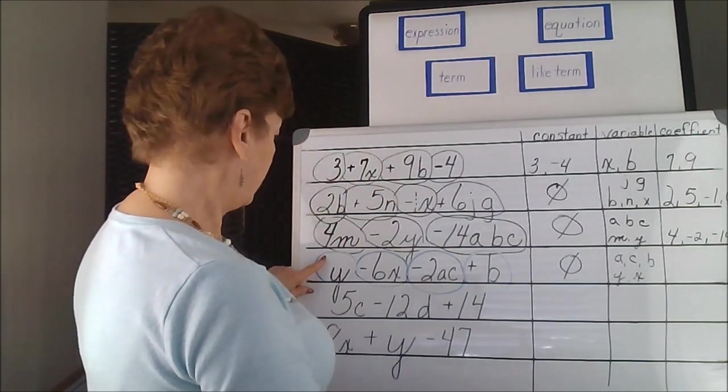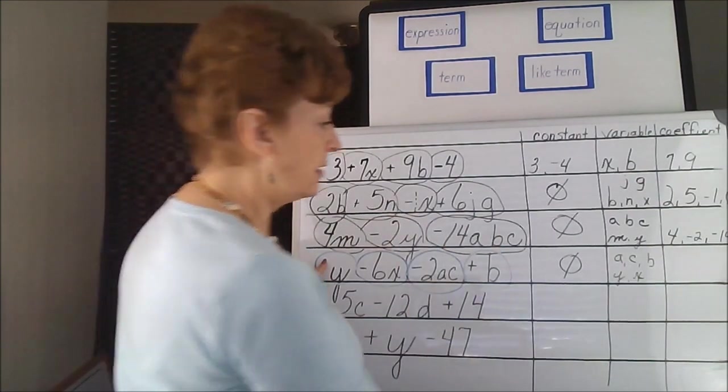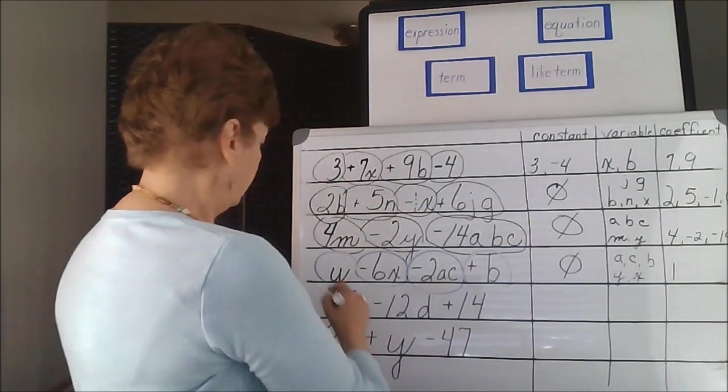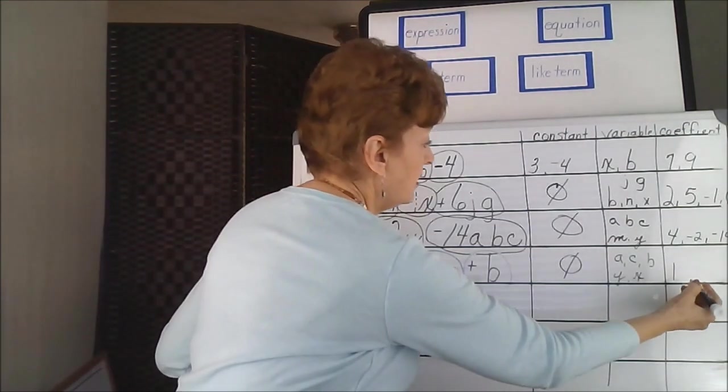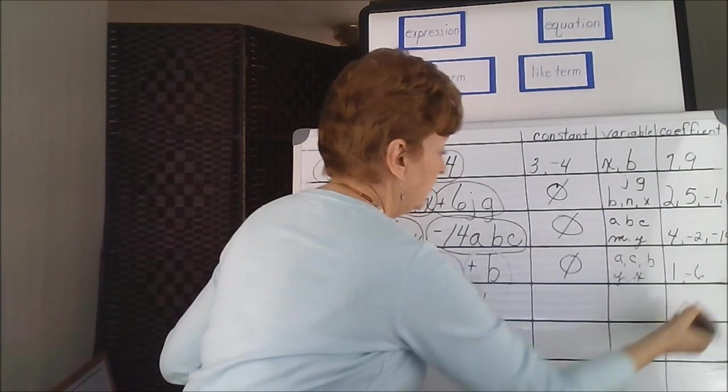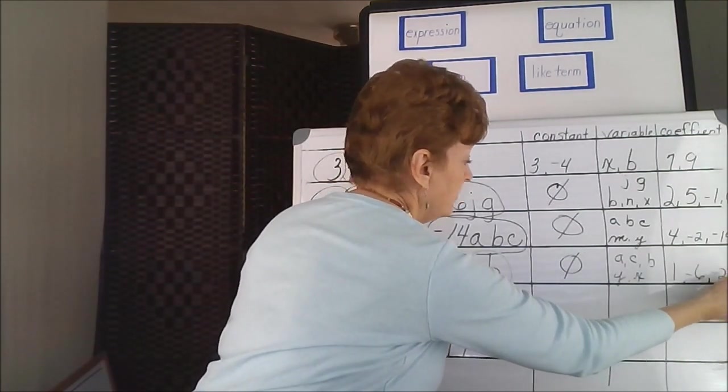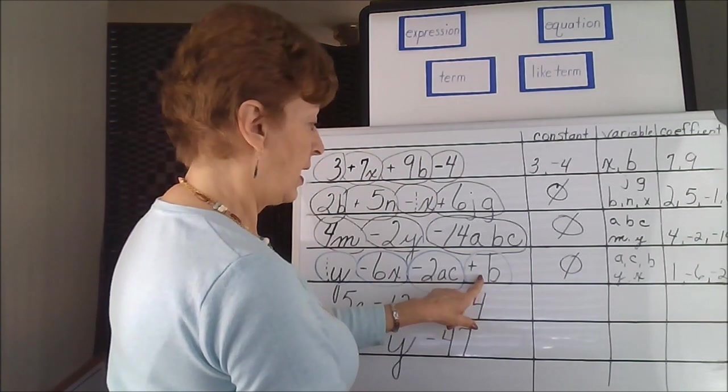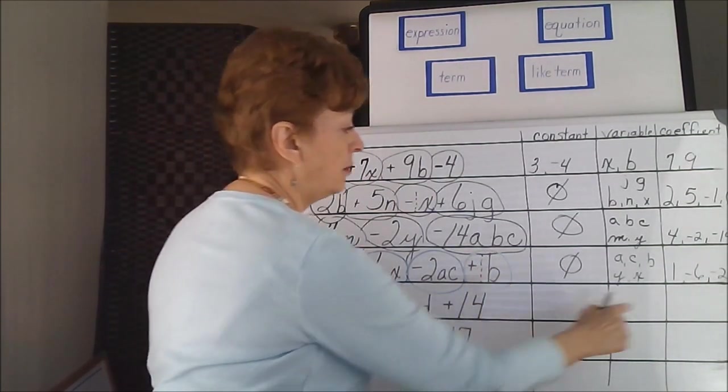Coefficient: there is no number by this letter, so we understand it to be 1. The negative 6 is a coefficient. Negative 2 is a coefficient. And again, we have just a single letter, so this is understood to be 1, but we already have it.